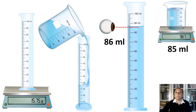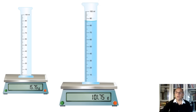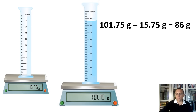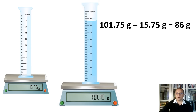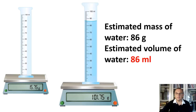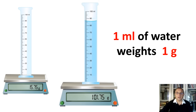By looking at the beaker, we estimated it as 85 milliliters. Now let's find the mass of the graduated cylinder with water — it is 101.75 grams. To find the mass of water in the graduated cylinder, we subtract the mass of the empty graduated cylinder from the mass of the graduated cylinder with water, and we end up with 86 grams. The estimated volume of water was also 86 milliliters. Pause the video and think about what this means.